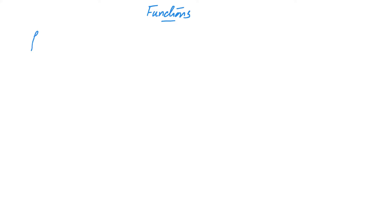Having studied the structure of Rⁿ, we will now look at functions from Rⁿ to Rᵐ. As you are all familiar with functions from A to B where A and B are arbitrary sets, we will not be recalling the abstract definition. Rather, we will look at what a function from Rⁿ to Rᵐ does.